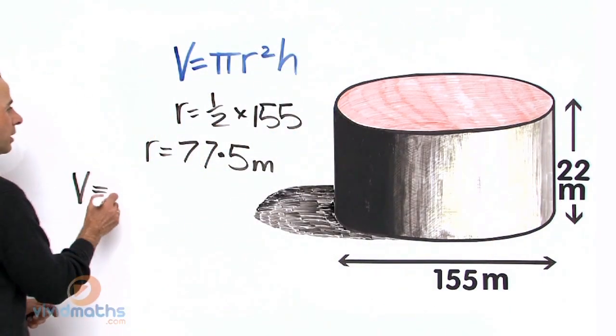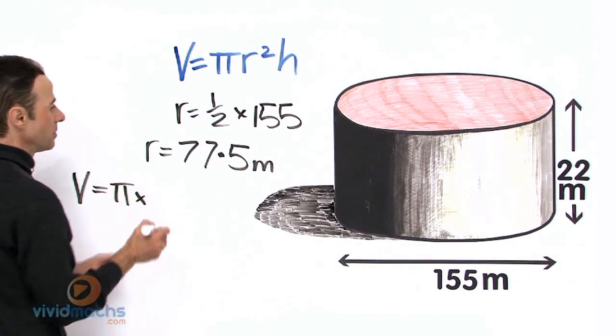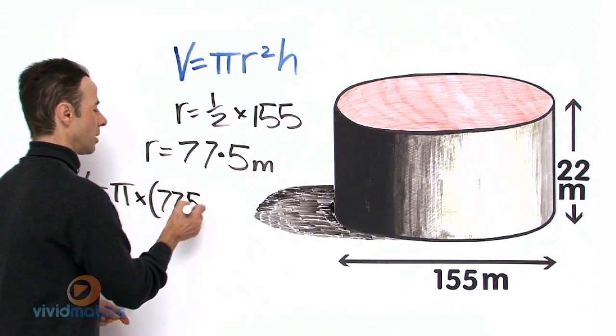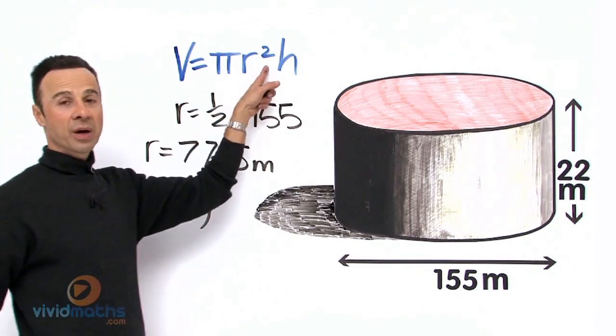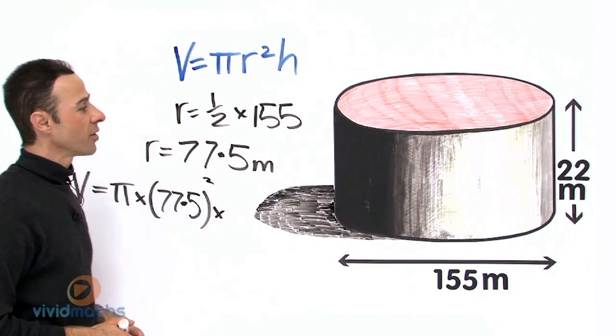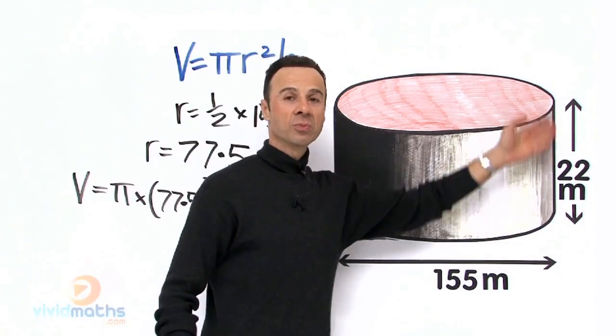V equals pi times r. Now we do what we do with r—it says r squared, the little 2 on top—so we square that, times the height. Now the height is a whopping 22 meters right over there.